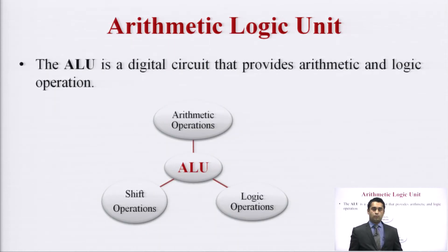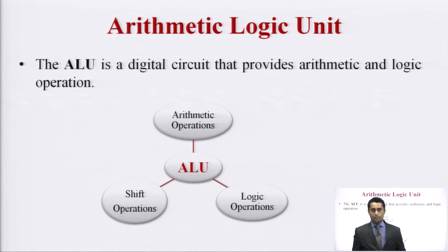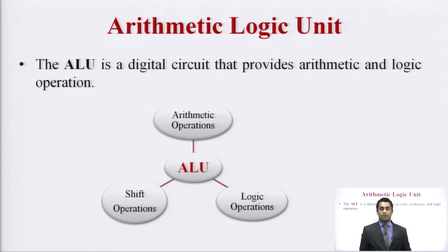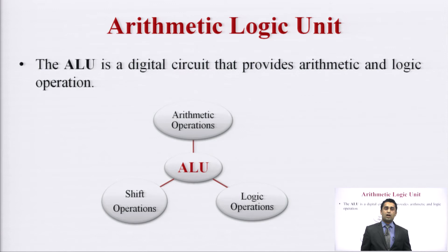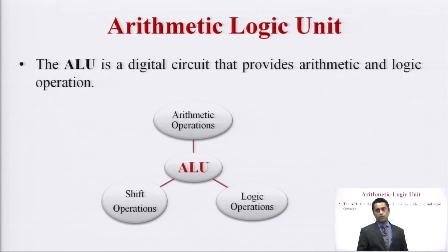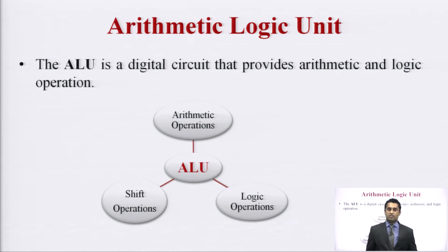Let us have a look at the ALU. ALU comprises three main categories of operations. First are arithmetic operations, which include addition, subtraction, multiplication, division, and in addition: incrementer, decrementer, and finding the complement of a number. Shift operations are those where we perform bitwise shifting of a number — if I have a number with four binary bits and want to shift it right or left, shift operations are used. Logic operations are the bitwise operations which perform XOR, OR, and NOT.